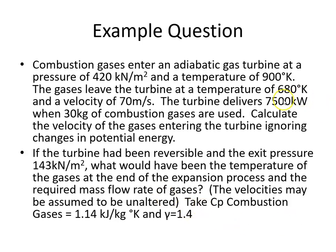The turbine delivers 7500 kW when 30 kg of combustion gas is used. Calculate the velocity of gases entering the turbine, ignoring changes in potential energy.